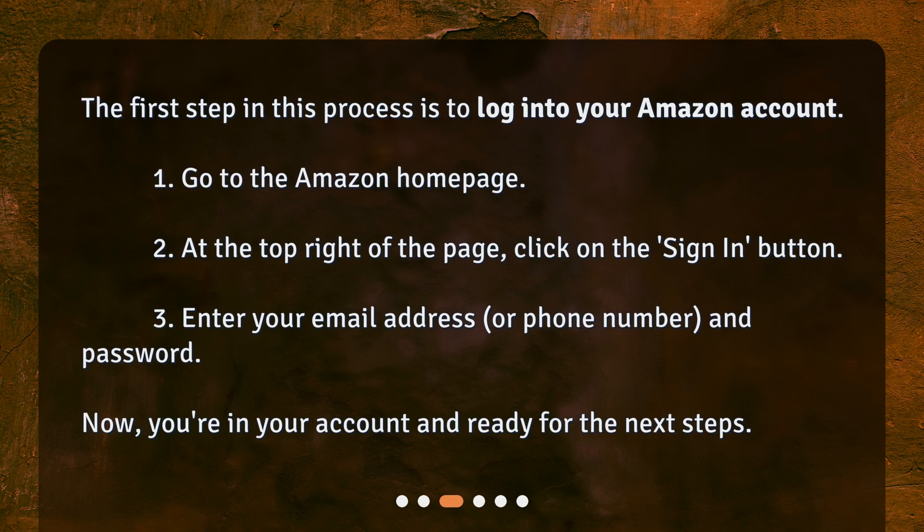How to access your Amazon account: The first step in this process is to log into your Amazon account. One: go to the Amazon home page. Two: at the top right of the page, click on the Sign In button. Three: enter your email address or phone number and password. Now you're in your account and ready for the next steps.